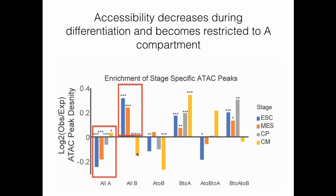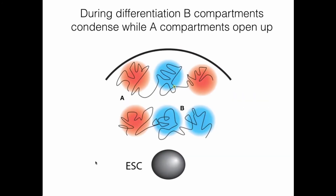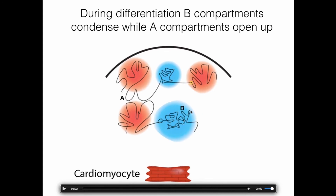Integrating these three aspects of the genome — Hi-C, ATAC-seq, and RNA-seq — we build a picture where over differentiation, the B regions pack down and the A regions open up, along with some regions dynamically moving from B to A. Additional data suggests that TAD boundaries are specifically lost in B regions that pack down more tightly during differentiation, suggesting that neighboring regions held separate in the ESC state may pack down into larger heterochromatic foci during differentiation.